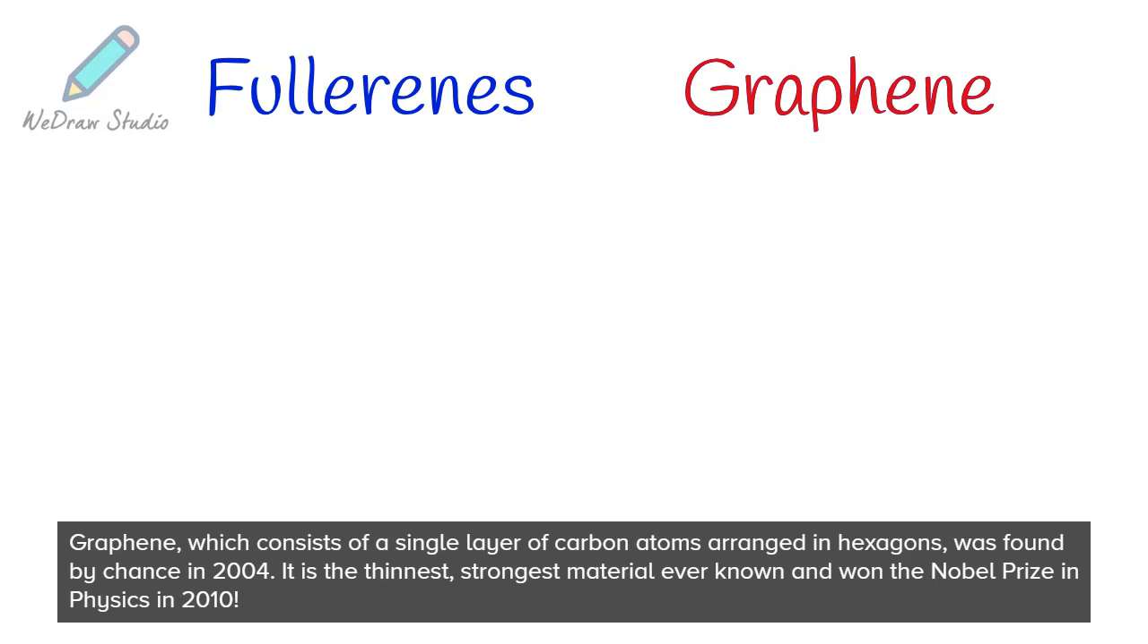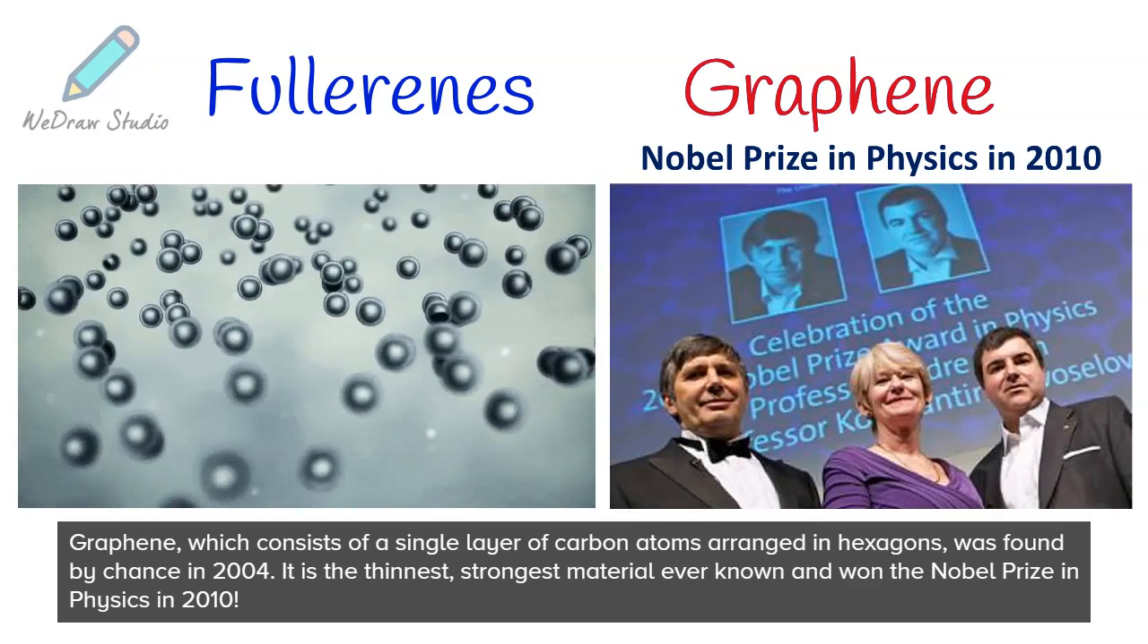Other carbon allotropes include fullerenes and graphene. Fullerenes, in which atoms are arranged in closed shells, were discovered in 1985. The discovery won the 1996 Nobel Prize in Chemistry. Graphene, which consists of a single layer of carbon atoms arranged in hexagons, was found by chance in 2004. It is the thinnest, strongest material ever known, and won the Nobel Prize in Physics in 2010.